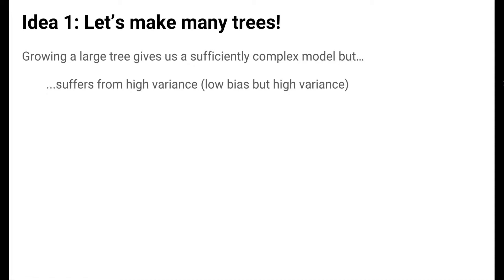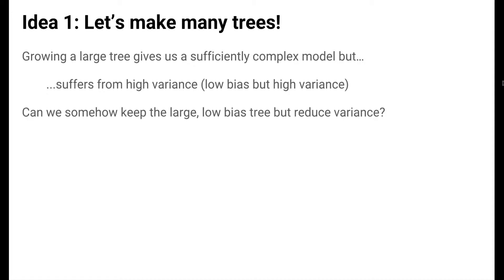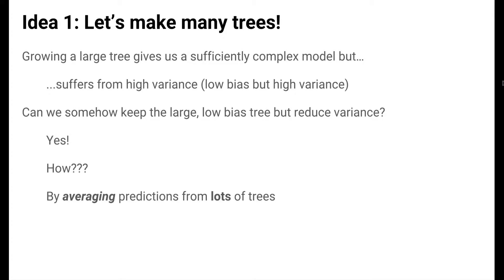When we have complex models, they have low bias. But complex models, we also expect to change a lot when we have slightly different training data — they have high variance. Can we somehow keep that large, low-biased tree, but somehow reduce its very high variance? That would be the ideal. It turns out we can. The idea will be to take predictions from lots of trees and average them together.